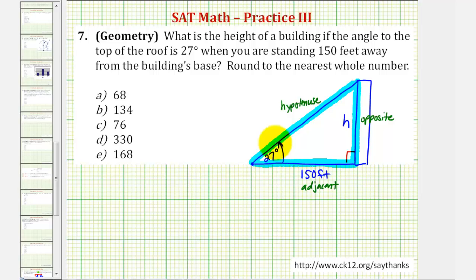But because we're trying to find h and we know the length of the adjacent side, we should recognize that we want to use the tangent function because tangent theta is equal to the ratio of the opposite side to the adjacent side, which means we can write a trig equation where tangent 27 degrees must be equal to the ratio of the opposite side to the adjacent side, or in this case, h divided by 150 feet.